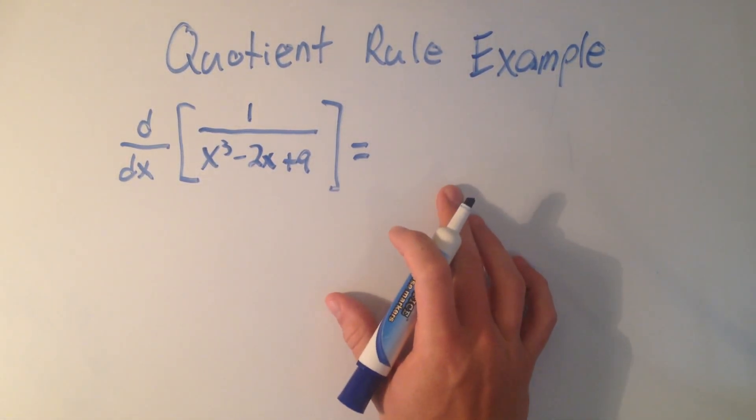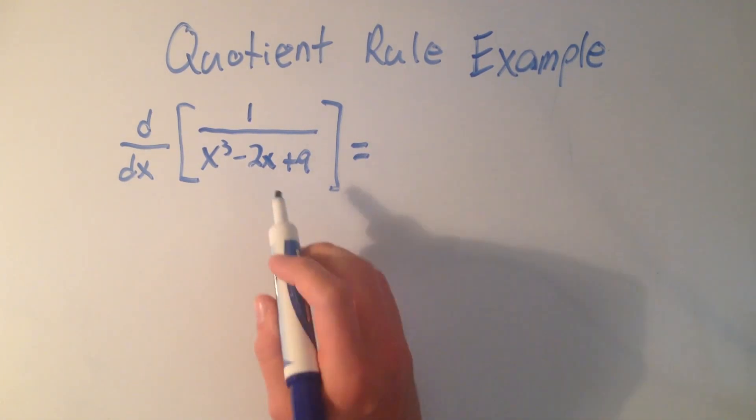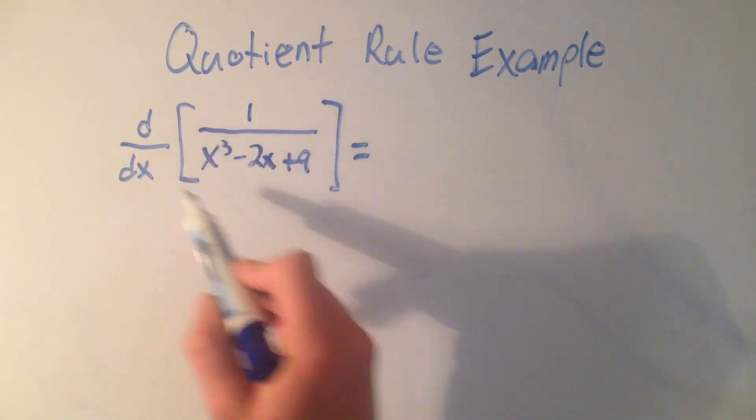Let's do our first example with the quotient rule. So if you have the quotient rule memorized, and I do encourage you to memorize it, I want to take the derivative of this thing.